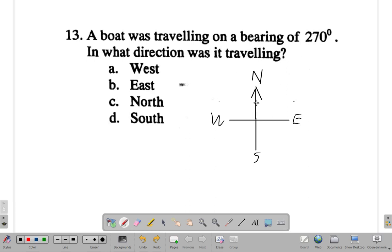Now from north, a quarter of a turn, that's 90 degrees. Half a turn, that's 180 degrees. The next quarter is 270 degrees. So the boat would be going this way and it is west.